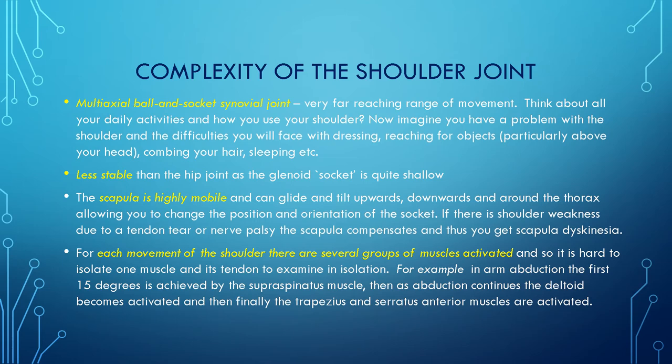The shoulder joint is less stable than the hip joint, as the socket is quite shallow. The glenoid does not go fully around the humerus, which allows it to be more free and to have a greater range of movement, but because of that it is more prone to dislocation.